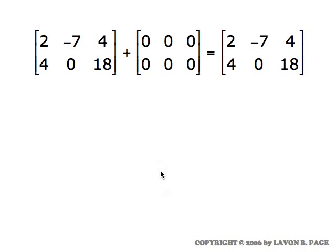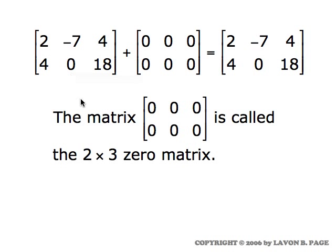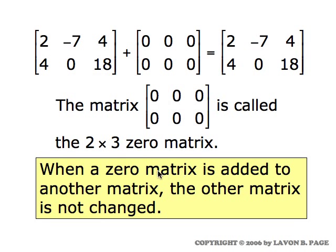In this illustration I'm adding two matrices, and notice that the second matrix has nothing in it but zeros. Since adding zero to a number doesn't change the number, the obvious net effect is to leave the first matrix exactly unchanged. A matrix which is filled with zeros is called a zero matrix. In this case we're looking at the specific situation of the two-by-three zero matrix — all of whose entries are zero. What we have observed is that when you add a zero matrix to another matrix, the other matrix is not changed.